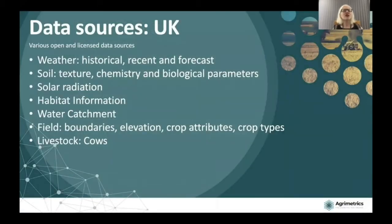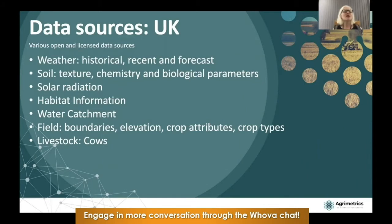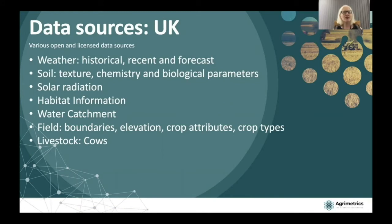As Richard spoke about the catalog earlier, I want to mention some of the data sources paramount in the design of our ontologies. We have ingested weather data — historical, recent, and forecast datasets. For soil, we have datasets about texture, chemistry, and biological parameters. We have the NASA solar radiation data, habitat information from Natural England, and water catchment data. For fields, we have quite a lot of datasets in the form of boundaries, elevation data, crop attributes, and crop types. And for livestock, we have data coming from a specific project called Smart Cow, with data very specific to cows.